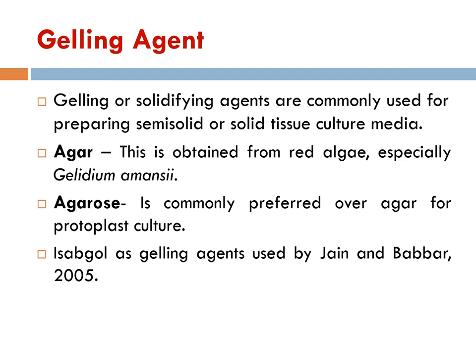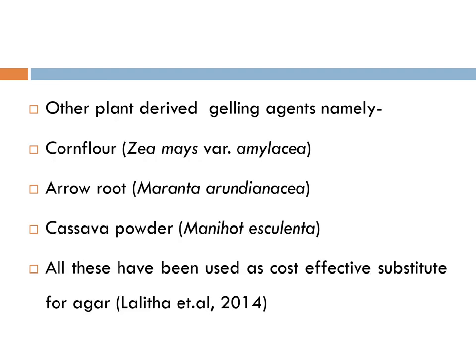Gelling agents are used as solidifying agents in semi-solid or solid media. Agar is obtained from red algae (Rhodium amansi). Agarose is the pure form of agar and is commonly preferred for protoplast culture. Other plant-derived gelling agents named cornflour, arrowroot, and cassava powders have all been used as cost-effective substitutes for agar.